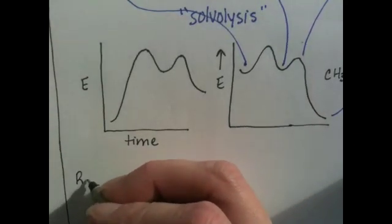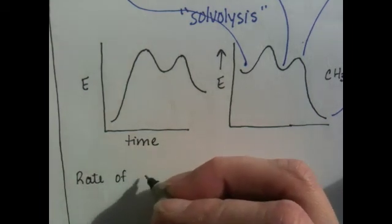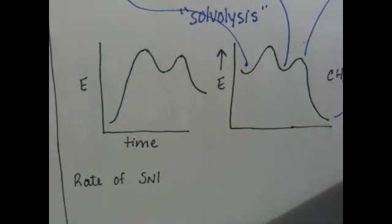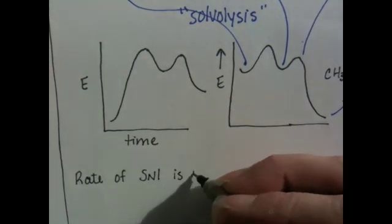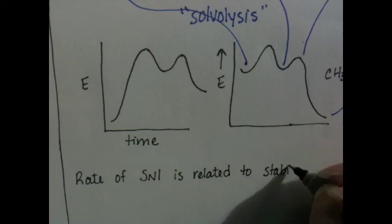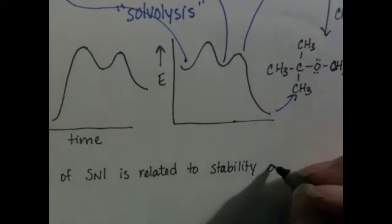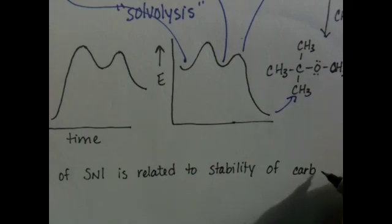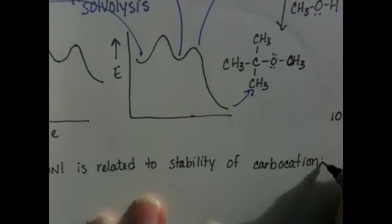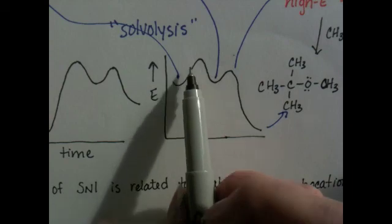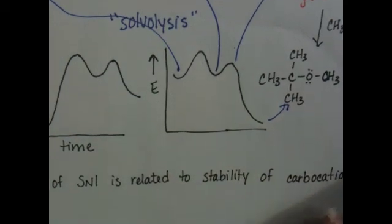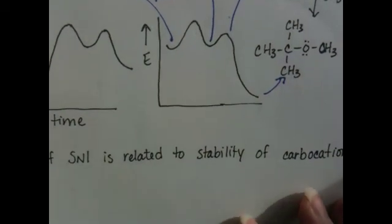The rate of the SN1 reaction is directly related to the stability of the carbocation intermediate that's formed. This makes a lot of sense because the carbocation has to be stable enough to form. If you are trying to generate a carbocation that's just ridiculously unstable, the reaction is not going to be able to draw enough energy in from its surroundings to actually occur.